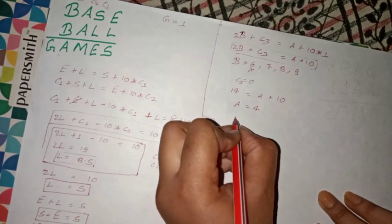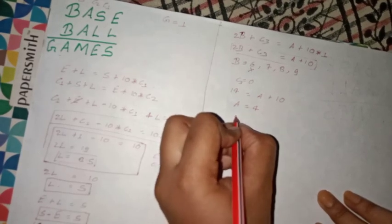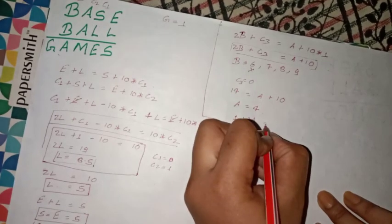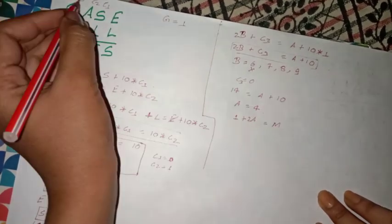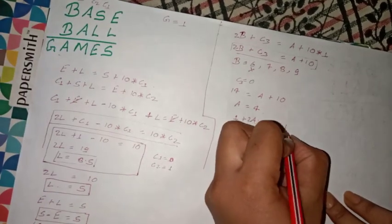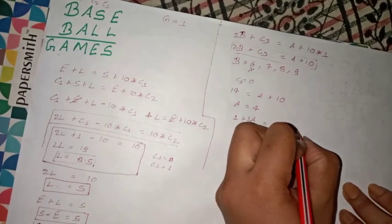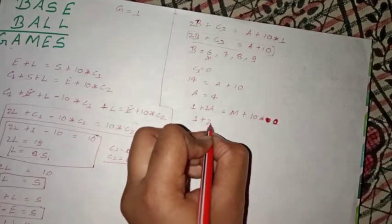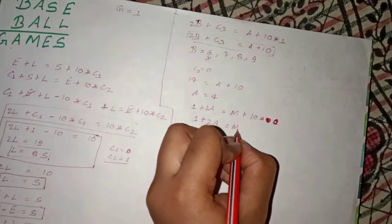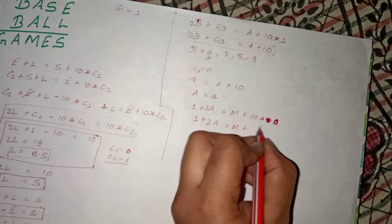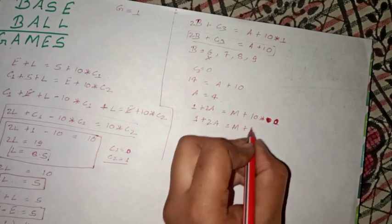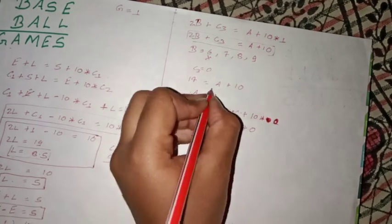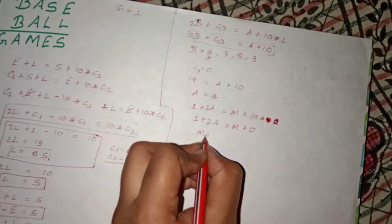Since c2 equals 1, we have 1 plus A plus A equals M. c3 value is already assumed 0, so 2A equals M. This gives A equal to 4 and M equal to 9.